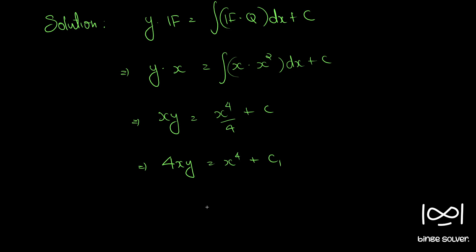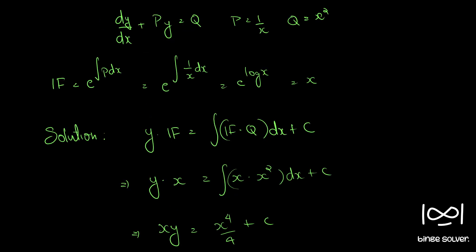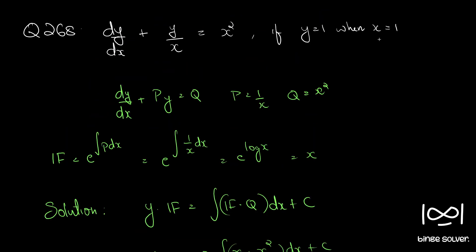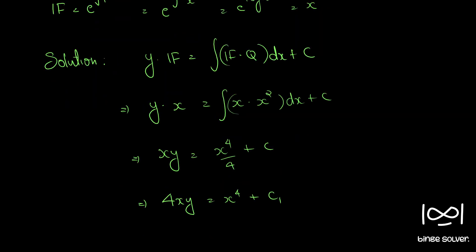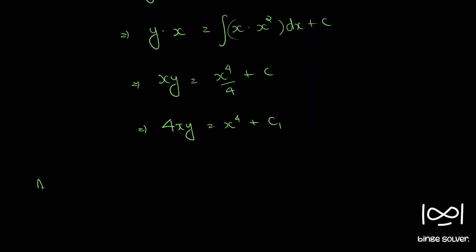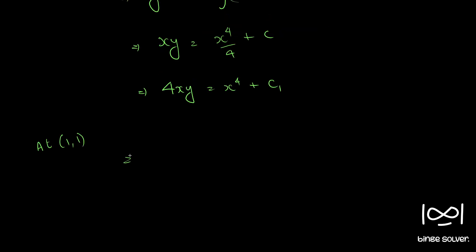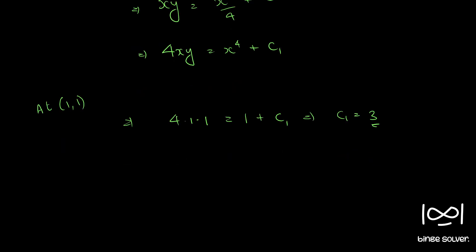So now we have an initial value, y equal to 1 when x is equal to 1. So at 1,1 we have 4 into 1 into 1 is equal to x raised to 4, again 1, plus c1. So c1 is equal to 4 minus 1, which is 3.